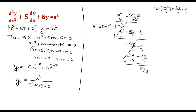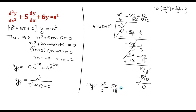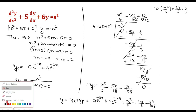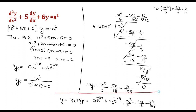For the next quotient term, choose 19/108 (since 18 times 6 is 108), so 19/108 times 6 gives 19/18. The derivative of that constant is 0. Therefore, the particular integral is x²/6 minus 5x/18 minus 19/108. The general solution is y equals c₁e^(−3x) plus c₂e^(−2x) plus x²/6 minus 5x/18 minus 19/108. This is the particular integral and the general solution of the problem.